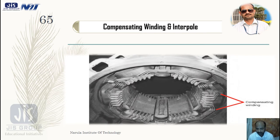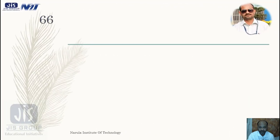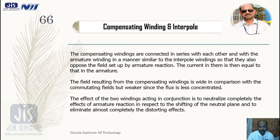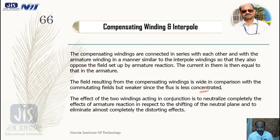In the main pole faces this compensating winding is used. Because this compensating winding carries current in the reverse direction, the field produced by it opposes the field set up by the armature reaction, since they carry current equal to the armature current. The compensating winding is wider in comparison with the commutating field, but weaker since the flux is less concentrated. The effect of the two windings acting in conjunction is to neutralize completely the effect of armature reaction with respect to the shifting of the neutral plane and to eliminate almost completely the distorting effect.